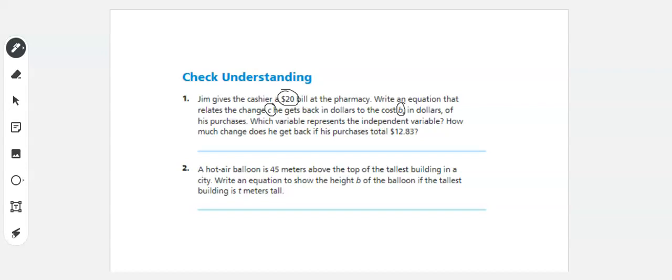So the independent variable is B because what you get back depends on what you gave him. So independent variable is B.